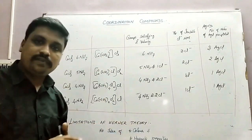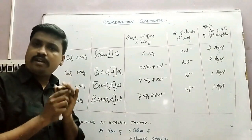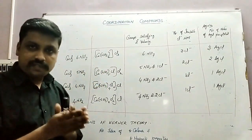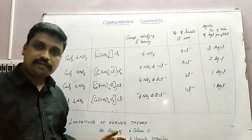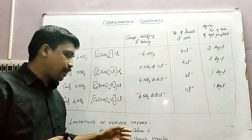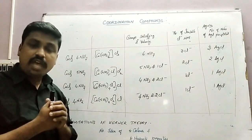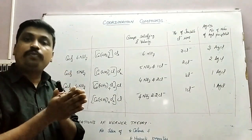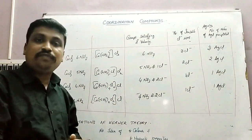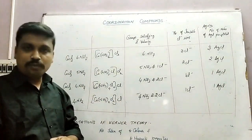What are the limitations of Werner's theory? It was the first proposed theory regarding coordination compounds, but it suffers from defects. The main defect is that it is not able to explain the color and magnetic properties of coordination compounds, which are the most important ones. Those explanations are given by the next theory, which we will deal with in the next classes. Thank you.